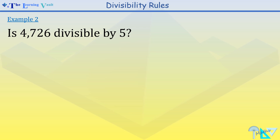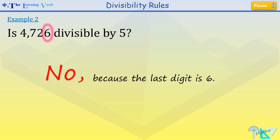Example 2. You may pause and have a go. Is 4726 divisible by 5? The answer is no, because the last digit is 6.